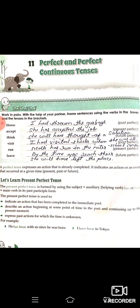Let's learn present perfect tense. The present perfect tense is formed by using the subject plus auxiliary plus main verb. Present perfect tense hum wahan use karenge jahan par kuch aisi action hui hai jo ki already completed ho chuki hai, poori ho chuki hai.